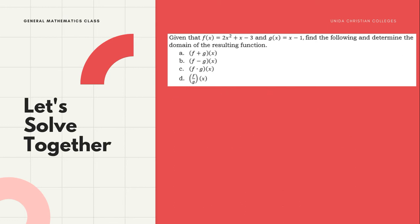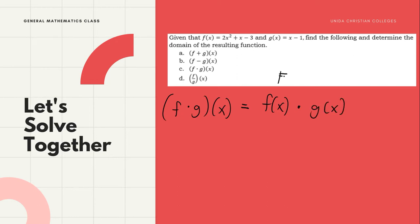Next, for letter C, we have (f·g)(x), denoted by f(x) times g(x). For multiplication, we will use the FOIL method — First, Outer, Inner, Last.